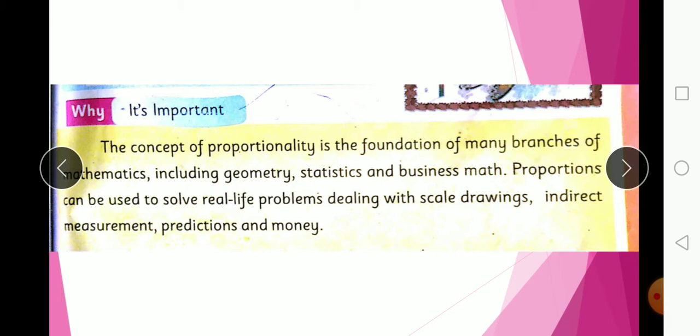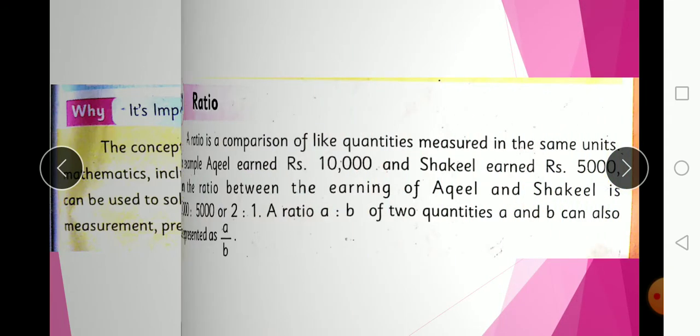Inverse variation is linked to proportions. Proportion is the relationship between two ratios. Proportionality is used in different branches of mathematics including geometry, statistics, and business math, and in real-life problems such as scale drawing, indirect measurement, prediction, and money. We use it in many real-life situations.